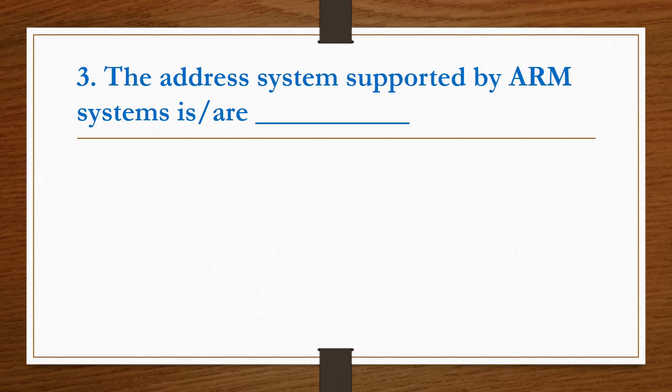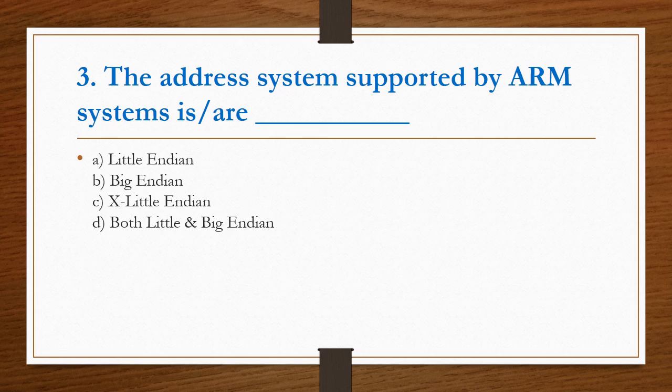Third question: the address system supported by ARM system is Little Endian, Big Endian, or both Little and Big Endian. Option D is the right answer. It supports both Little and Big Endian.